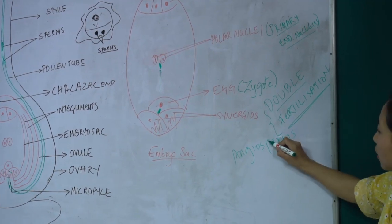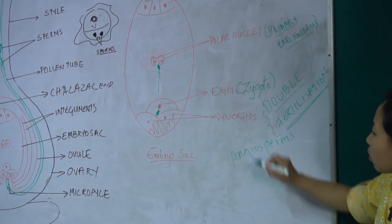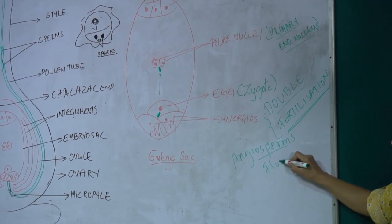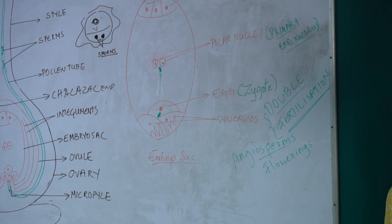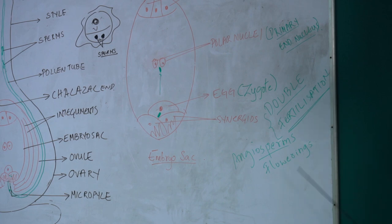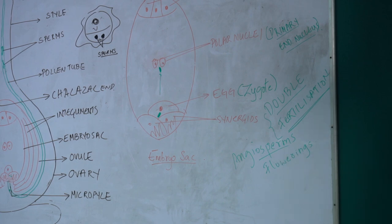Double fertilization is a characteristic feature of angiosperms only. This double fertilization is found only in flowering plants and is not found in gymnosperms, bryophytes, pteridophytes, or algae — it is found only in angiosperms.